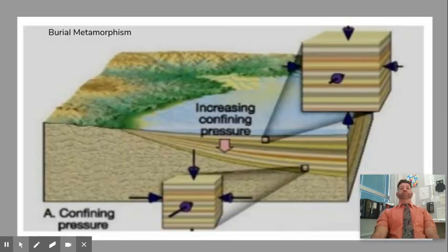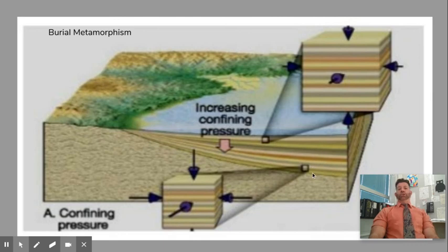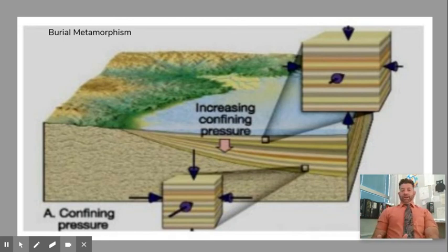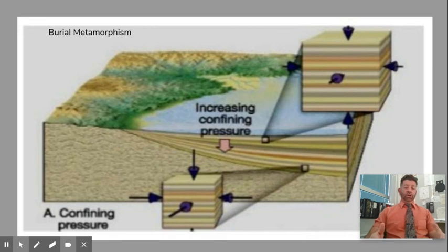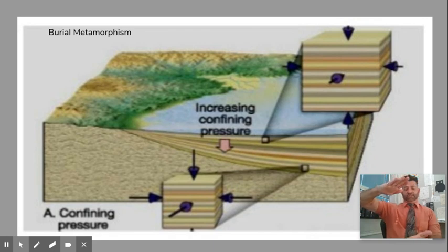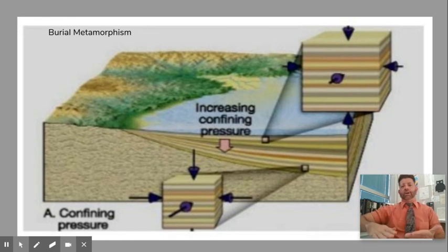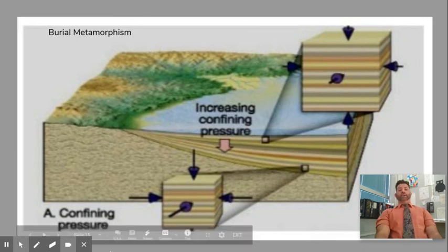The last major type is burial metamorphism — and burial is just what it sounds like. The rock layers get buried and start to stack up, and the pressure becomes so intense that it shifts the rock from sedimentary into metamorphic. Write down: burial metamorphism occurs due to the overriding pressure of previous rock types. All those rock beds stacking up, becoming so pressurized and heated, that it metamorphoses the rock. Simple stuff.